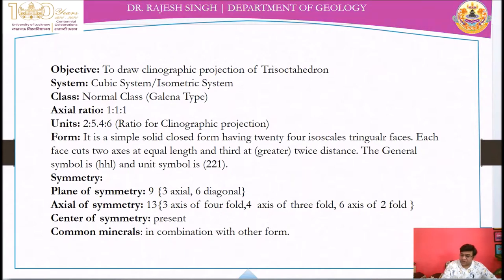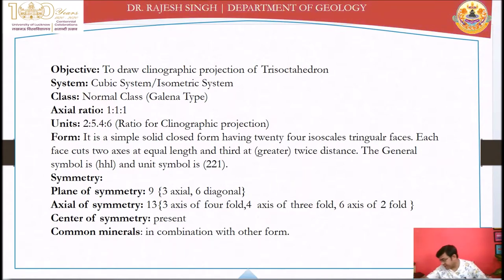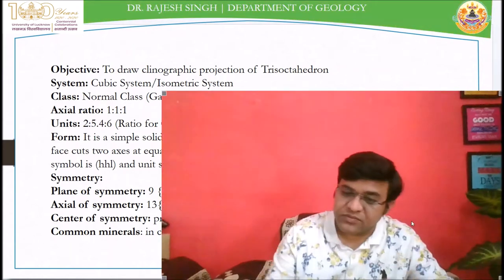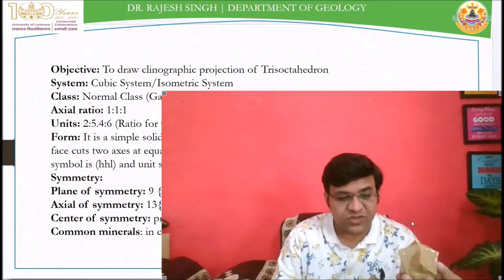This is the Tricectrahedron. I think you have seen my video related to making 3D models using cardboards. These are cardboard models only, not wooden models. In that video, in part 1, there are two crystals — the first one is Tricectrahedron and the second one is Tetrahexahedron. After making them, I realized these two crystal models are not perfect in comparison to the wooden models you may have seen in your practical classroom.